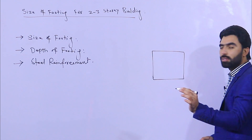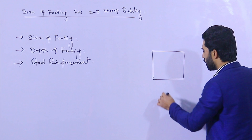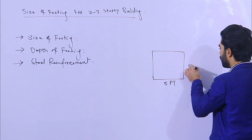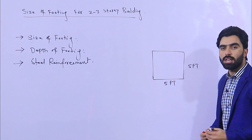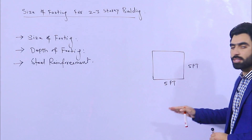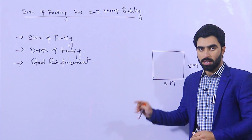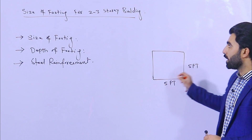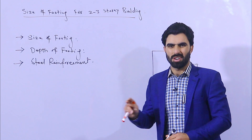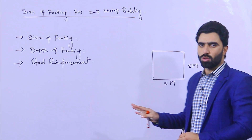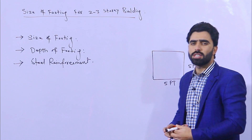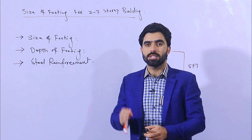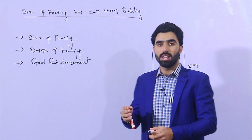Remember guys, the size of the footing should not be less than five feet by five feet for a two to three story building. This is the minimum size of footing. If you want to keep yourself safe for a residential building, the bearing capacity of the soil should be good — not low. Bearing capacity means the strength of the soil.